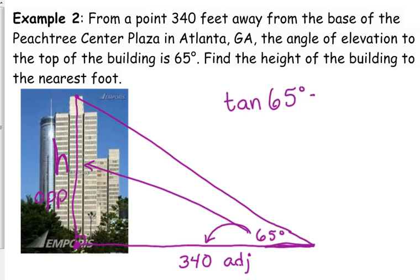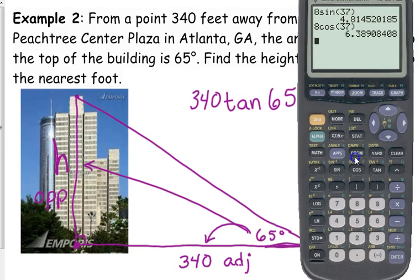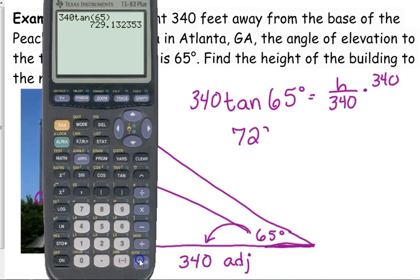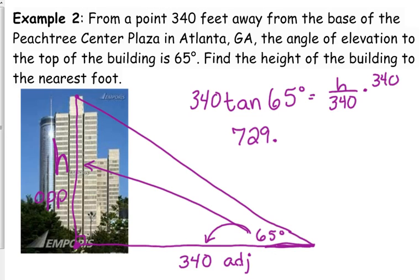Tangent of our angle, 65 degrees, is equal to the opposite, that's what we don't know, over the adjacent, 340. Okay, same scenario here. Very straightforward. All we need to do is multiply by the 340. And we get that it is 729... Oh, did it say to the nearest foot? Yeah, to the nearest foot. So approximately 729 feet tall.